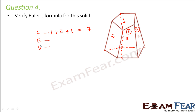For edges: there are five edges on the top pentagon and similarly five edges at the base, giving ten, plus five vertical edges connecting top to bottom, giving a total of fifteen edges. For vertices: five vertices on the top and five vertices at the bottom, so total ten vertices.